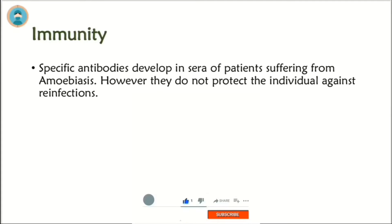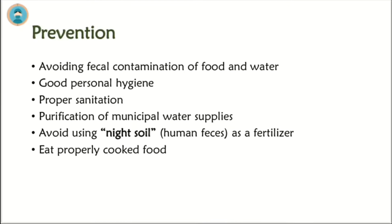Immunity: specific antibodies develop in patients suffering from amoebiasis; however, they do not protect the individual against reinfection. Prevention: avoid fecal contamination of food and water, maintain good personal hygiene, ensure proper sanitation, purify municipal water supplies, avoid using night soil or human faeces as fertilizer, and eat properly cooked food.